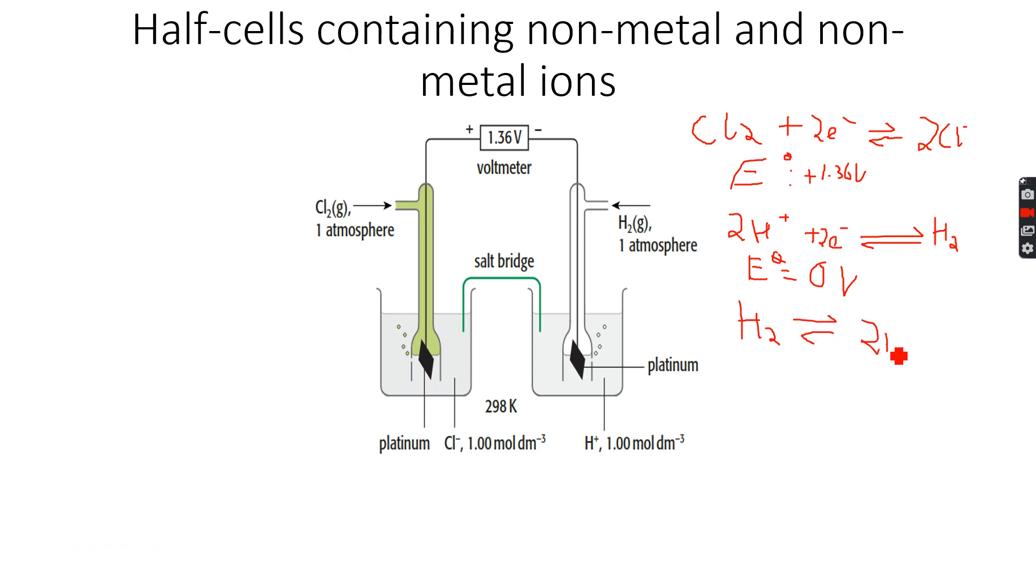So once we've got this, again when there is 0, neither positive nor negative, so this also stays 0. And then 1.36 plus 0 will give us +1.36 volts, and that is the value that we get on the voltmeter.